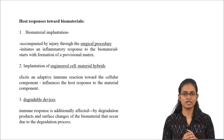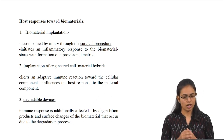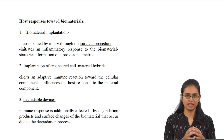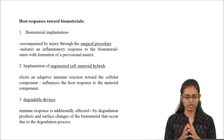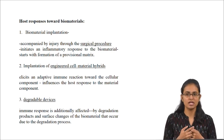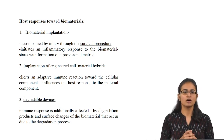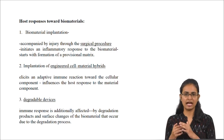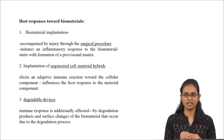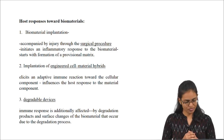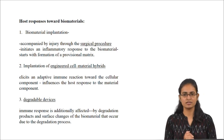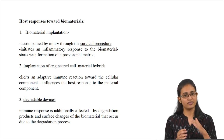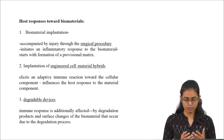These are the different host responses towards biomaterials. Upon biomaterial implantation, which is done through a surgical procedure, there is an injury accompanied by the implantation. In response to the injury, an inflammatory response is initiated in the host system, and this starts with the formation of a provisional matrix, usually collagen deposition. Or if you are implanting engineered cell-material hybrids, the cellular component of the material elicits an adaptive immune response from the host. Or if you are implanting degradable materials or implants, other than the material itself, its degradation products and the surface changes that occur on the material can elicit various immune responses.